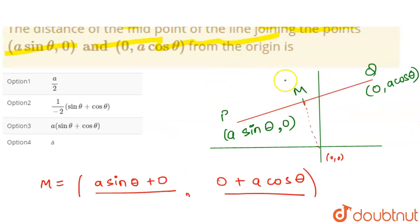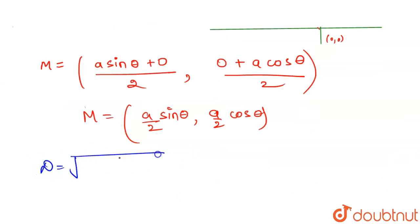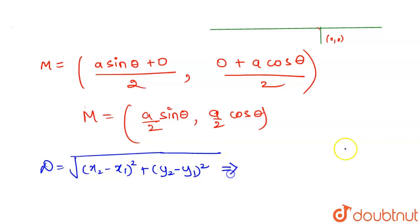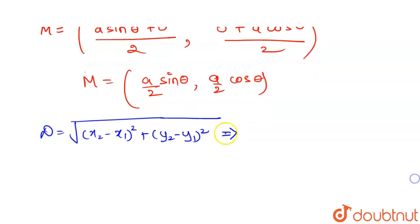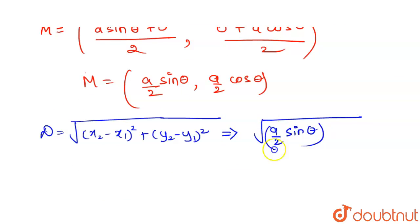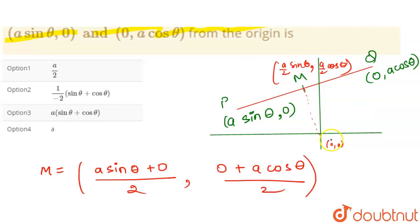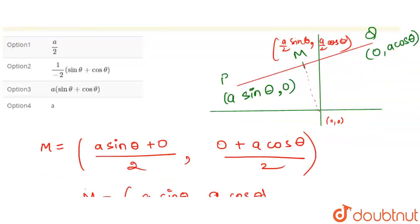Now we find the distance OM using the distance formula: √[(x₂ - x₁)² + (y₂ - y₁)²]. Substituting, we get √[(a/2 sinθ - 0)² + (a/2 cosθ - 0)²], which simplifies to √[(a/2 sinθ)² + (a/2 cosθ)²].